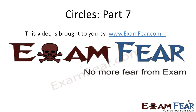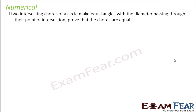Hello friends, this video on circles part 7 is brought to you by examfear.com — no more fear from exam. Let's take some numerical problems. The question says that if two intersecting chords of a circle make equal angles with the diameter passing through the point of intersection, then the chords are equal.